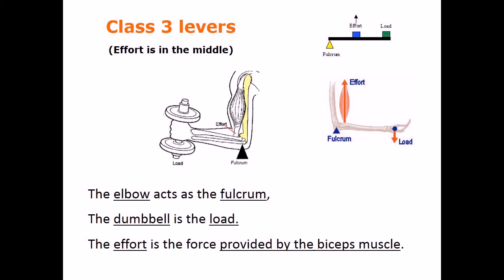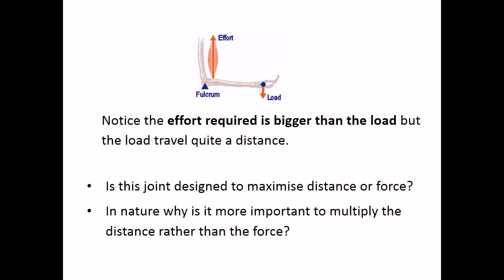Class 3 levers. Effort is in the middle. The elbow acts as the fulcrum. The dumbbell is the load. The effort is the force provided by the biceps muscle. Notice the effort required is bigger than the load but the load travels quite a distance.